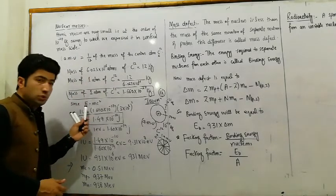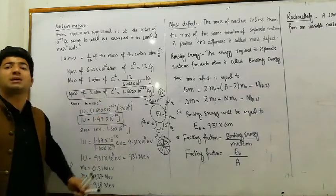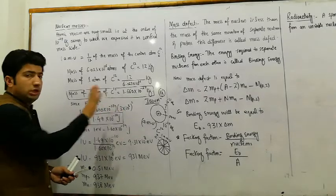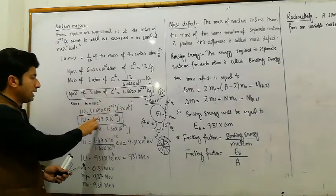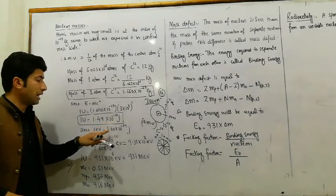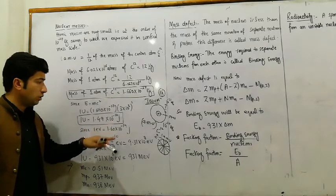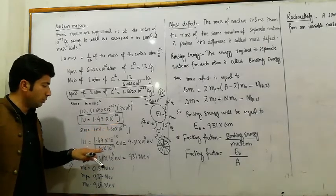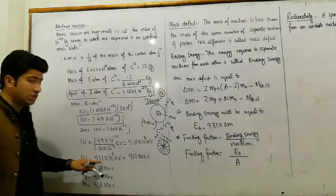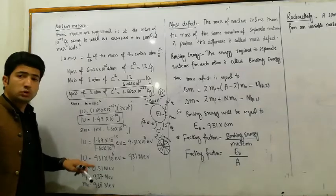According to E = mc², the rest mass energy equation, if we convert 1 unified mass unit into energy, with speed of light 3 × 10^8 m/s, the energy is 1.49 × 10^-10 Joules. Since 1 electron volt equals 1.6 × 10^-19 Joules, this converts to 931 × 10^6 electron volts — that is, 1 unified mass unit equals 931 MeV.